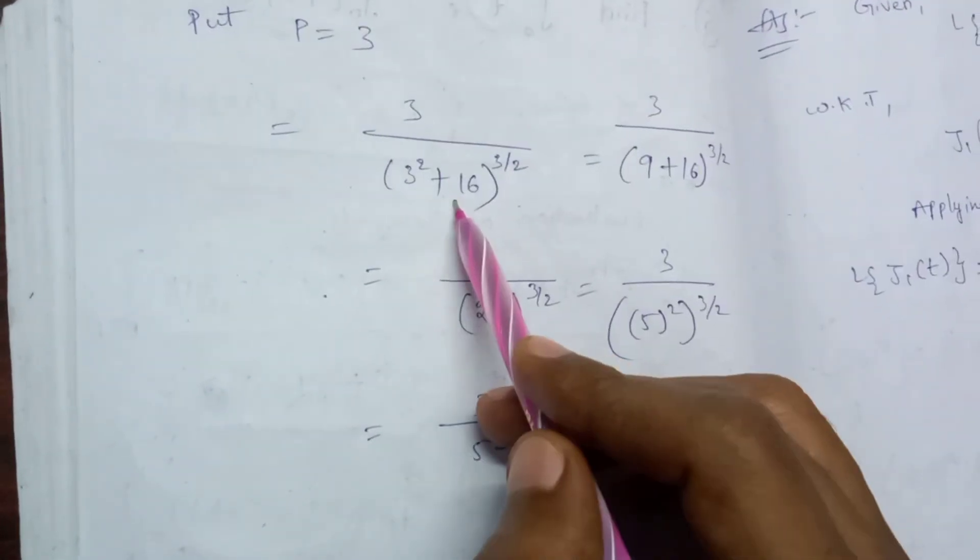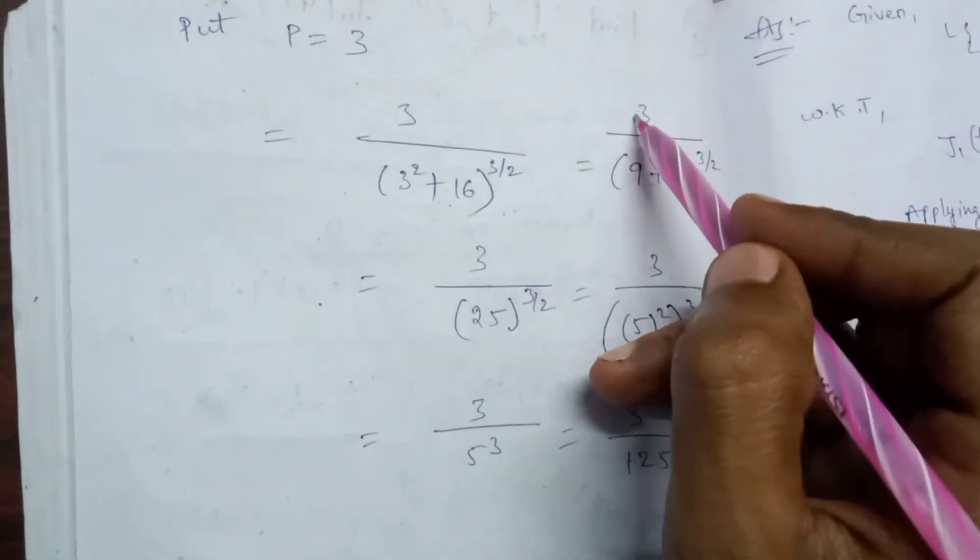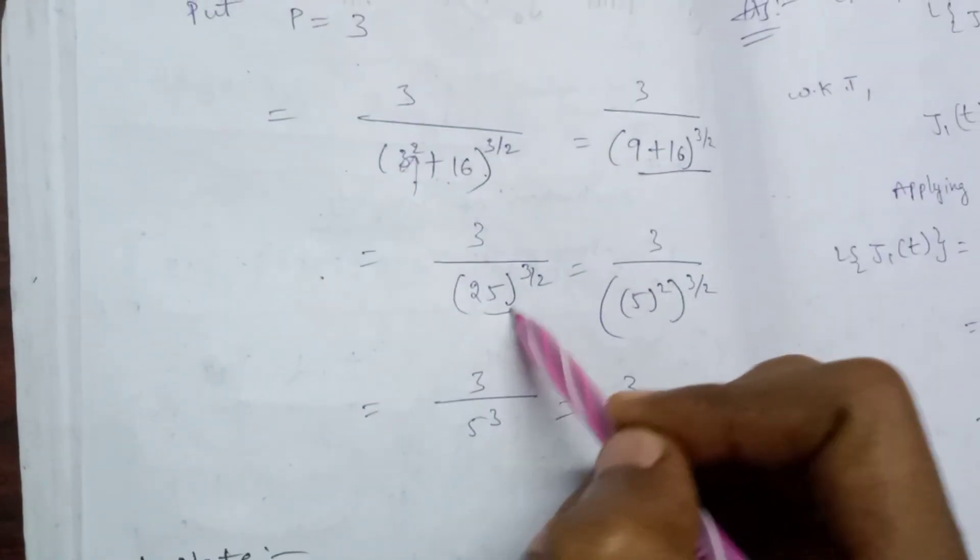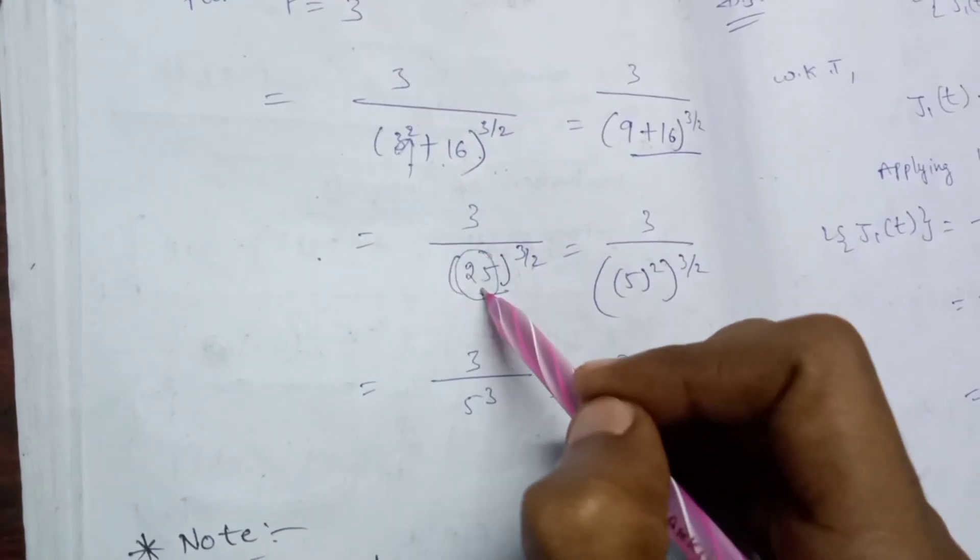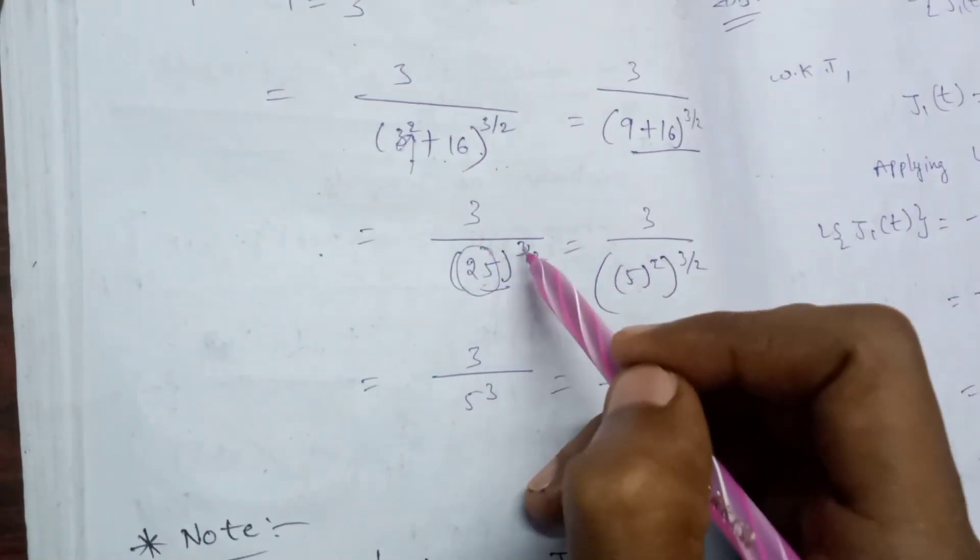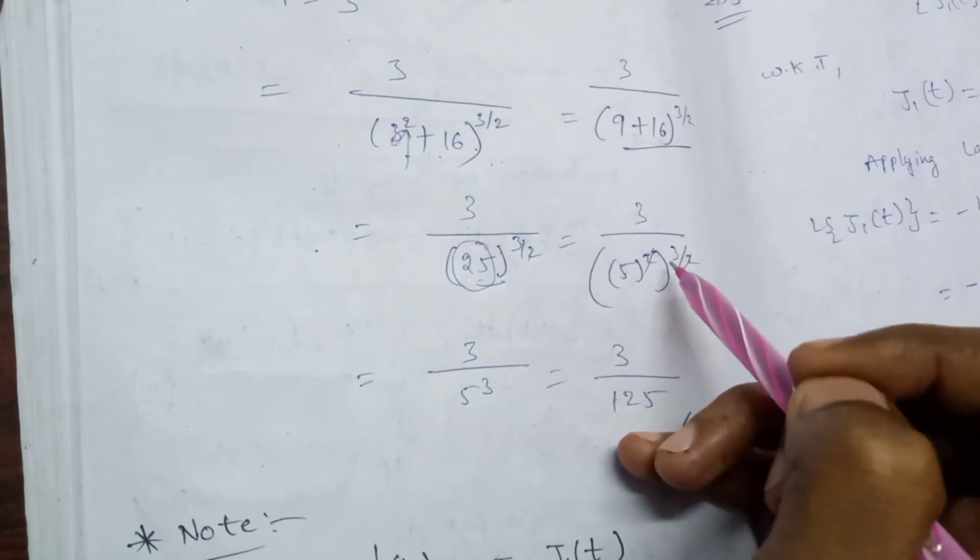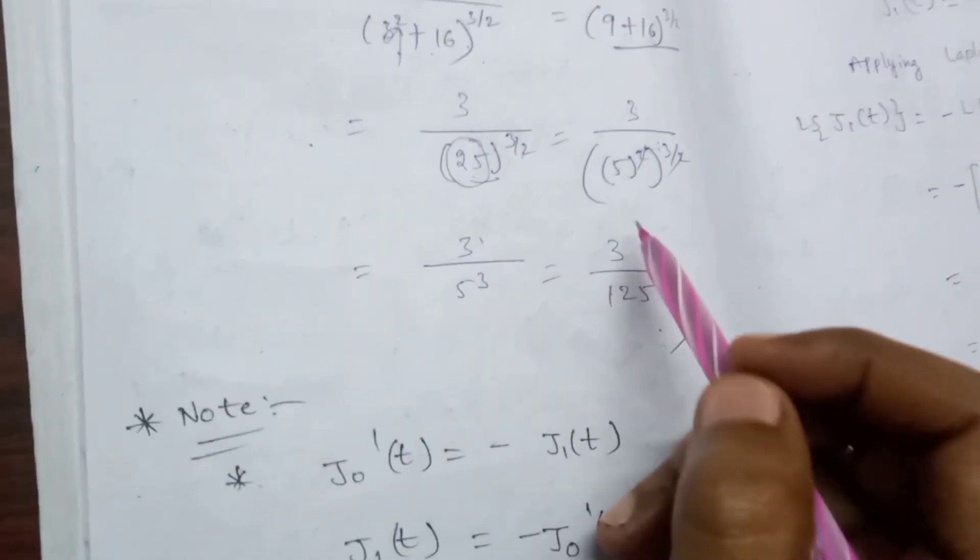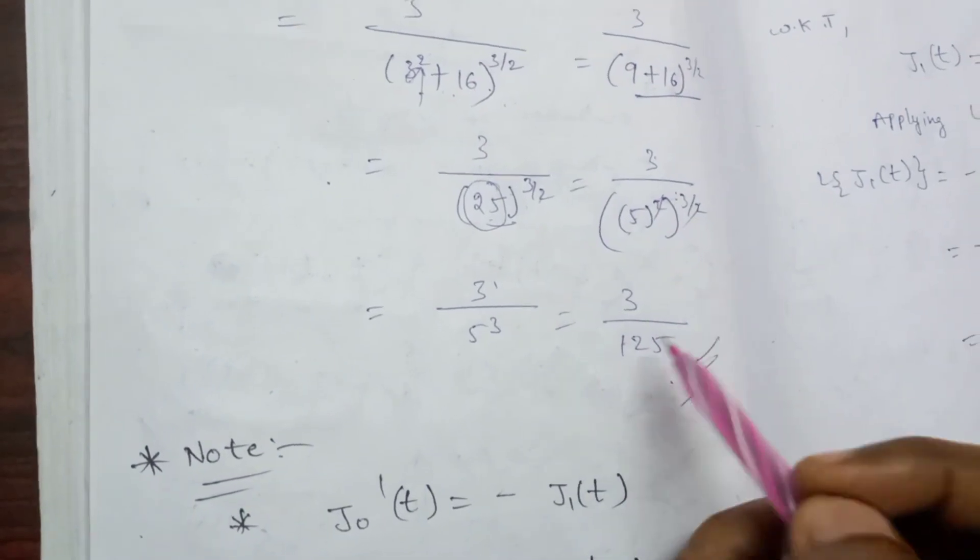3 divided by (9 plus 16) equals 3 divided by 25 to the power of 3/2. That equals 3 divided by 5 cubed. 5 cubed is 125. 3 divided by 125, and this is the value.